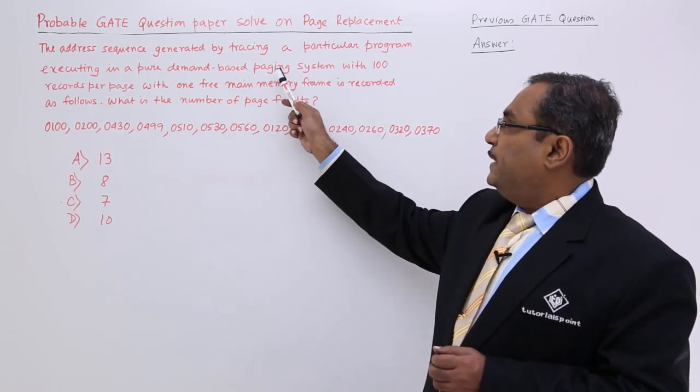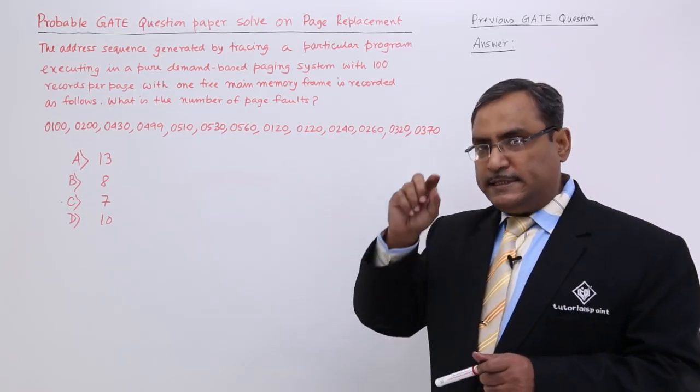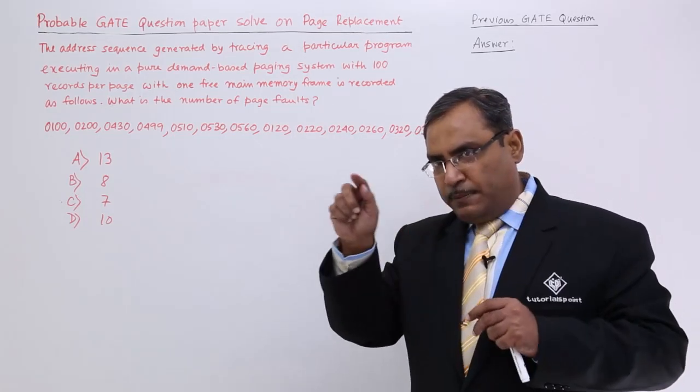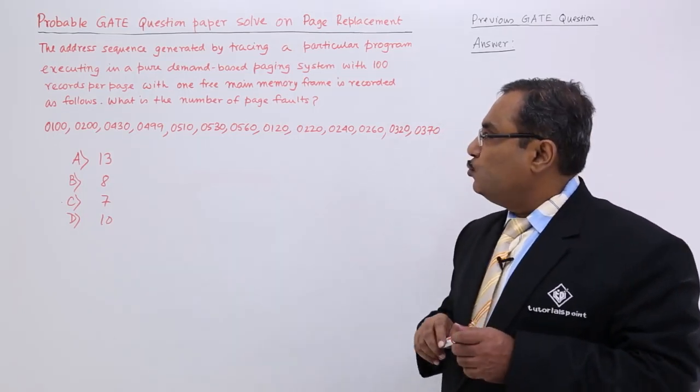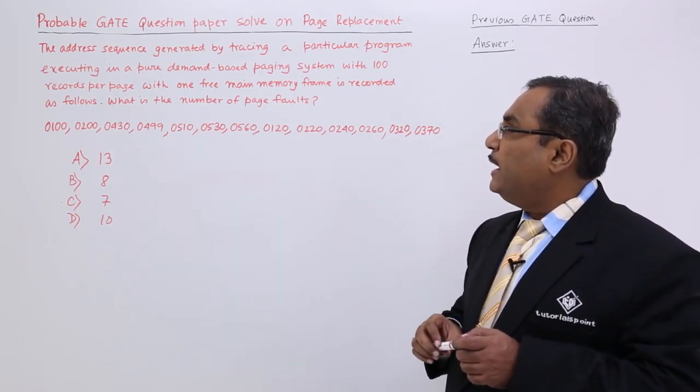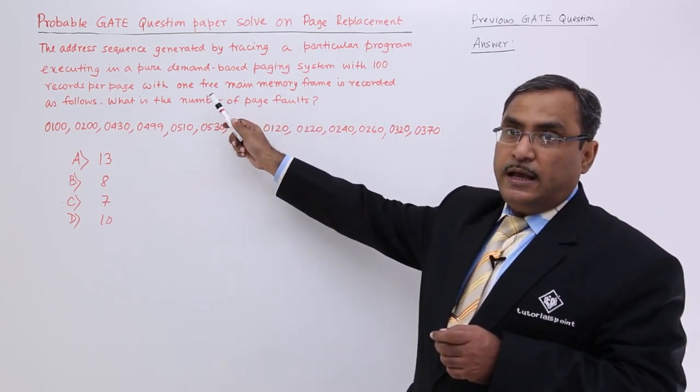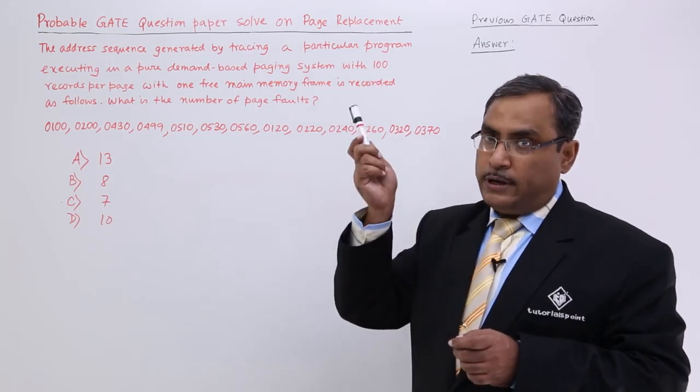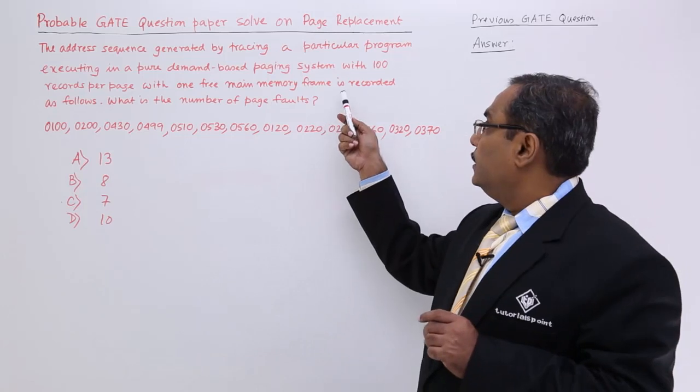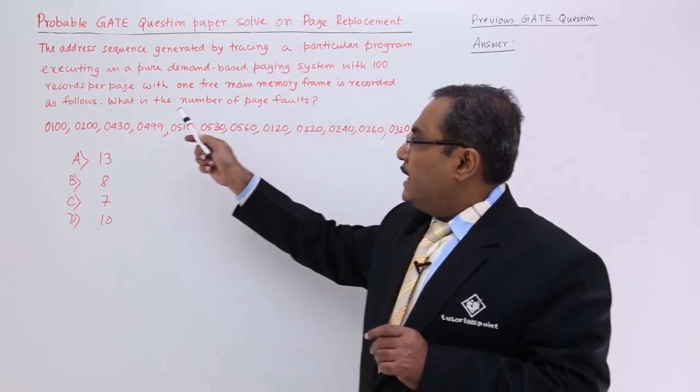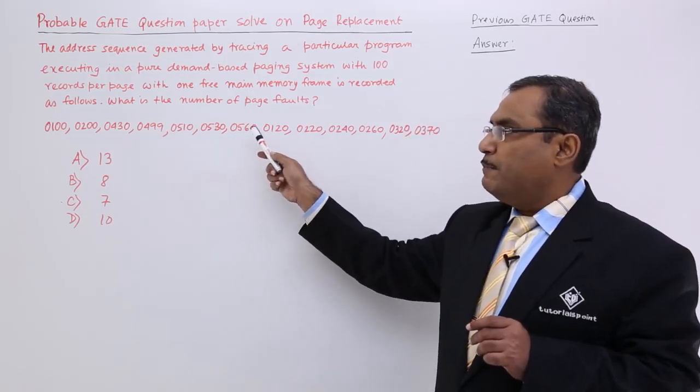Demand-based paging system with 100 records per page. That means each and every page will have 100 number of records per page with one free main memory frame. There is only one free memory frame, and all the pages are supposed to get loaded to that free memory frame. There is no other alternative. These are the references they have made.